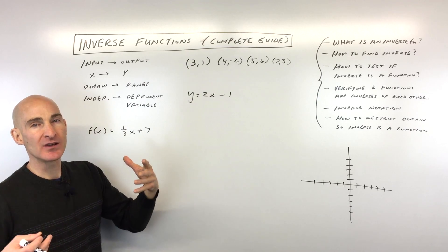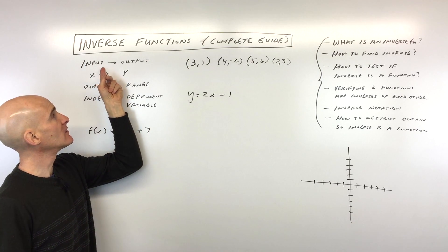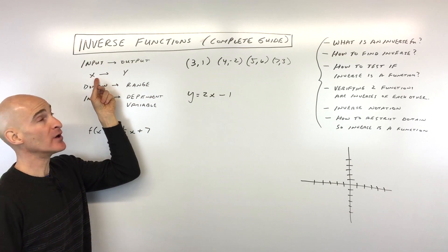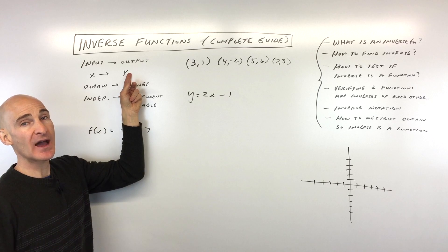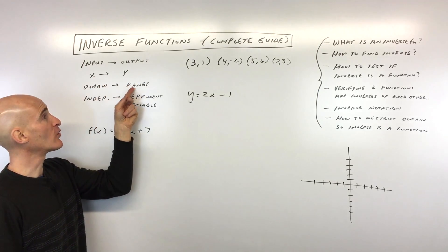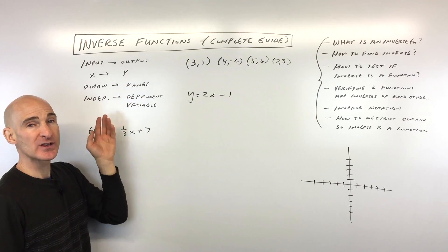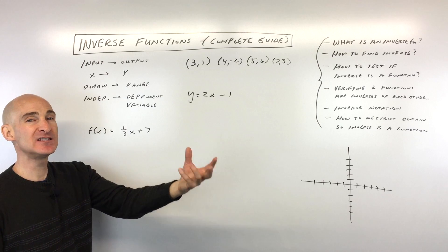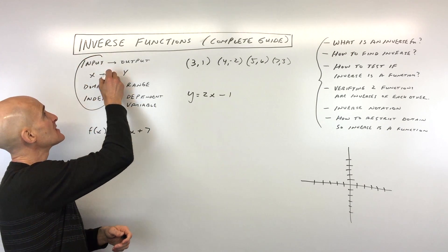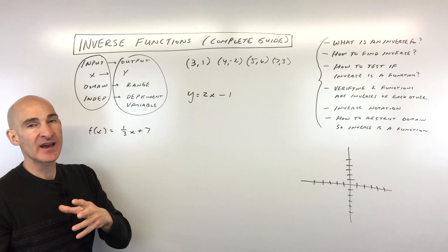With a function, you have an input and an output. You have x, which is generally associated with the input, and y, which is generally associated with the output. The domain is associated with x, the range is associated with y. Then you have the independent variable — that's what you put into the function — and the dependent variable — that's what comes out.